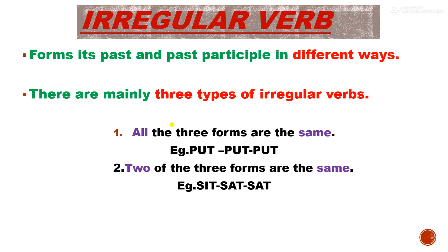Now for irregular verbs, there are three types of changes. The first type is where all three forms are the same — present, past, and past participle are identical. For example, cut, cut, cut. This does not follow the -ed rule, so it is called an irregular verb.